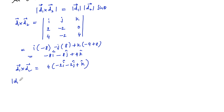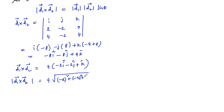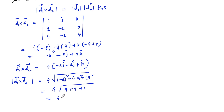Then mod of d1 cross d2 is equal to 4 times root of minus 2 whole square plus minus 2 whole square plus 1 square, which is 4 times root of 4 plus 4 plus 1, that is root 9 equals 3. So 4 into 3 is 12 units.